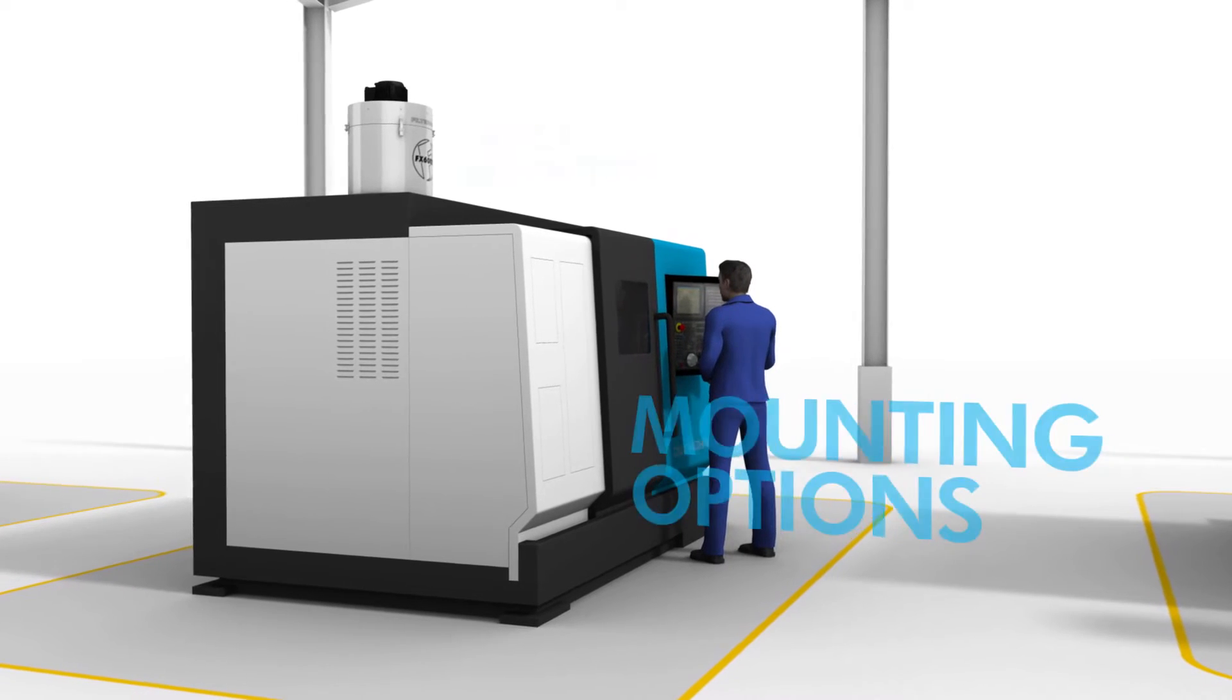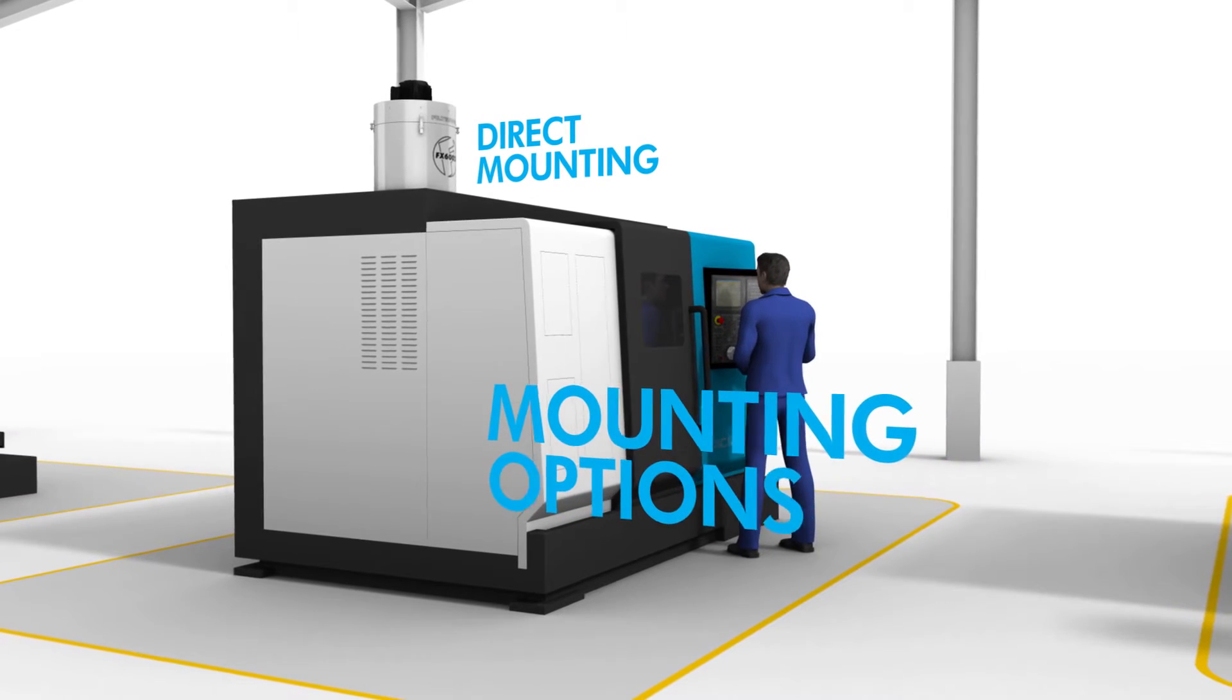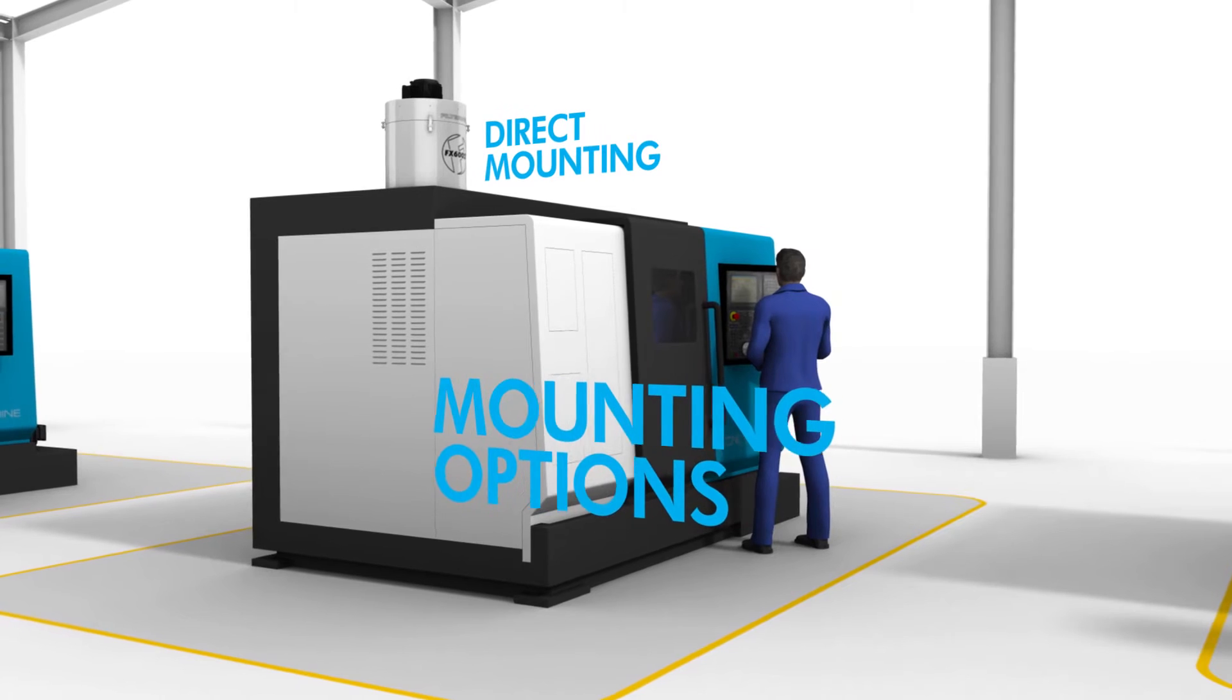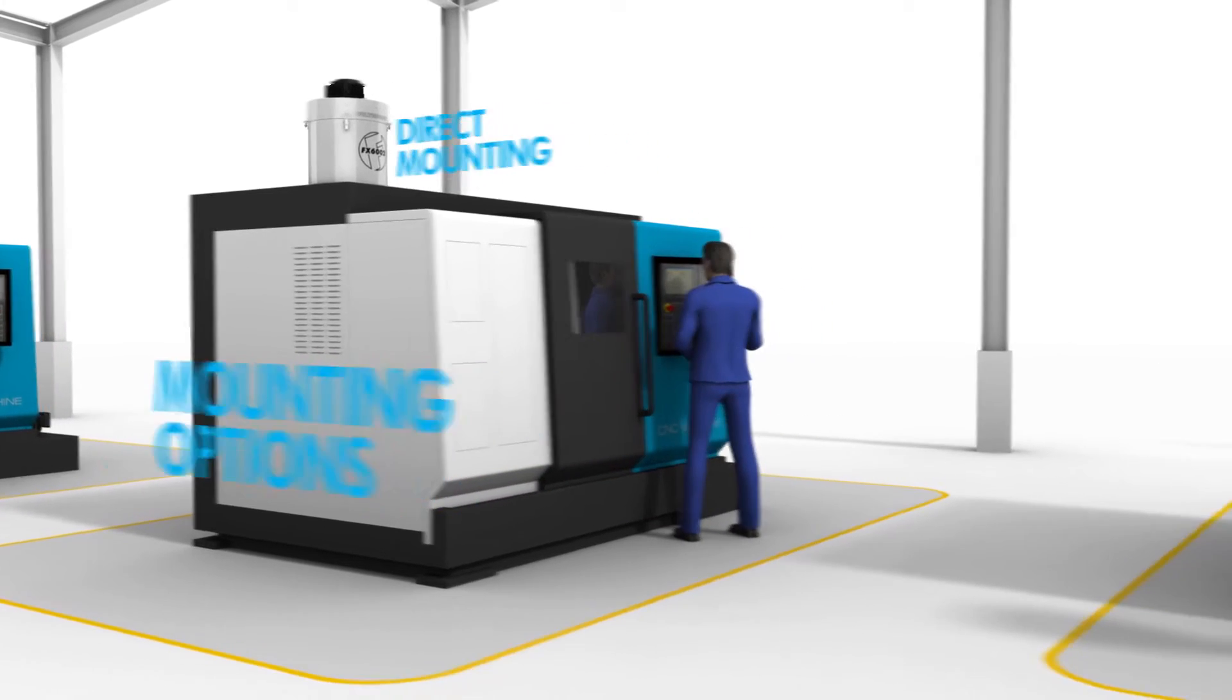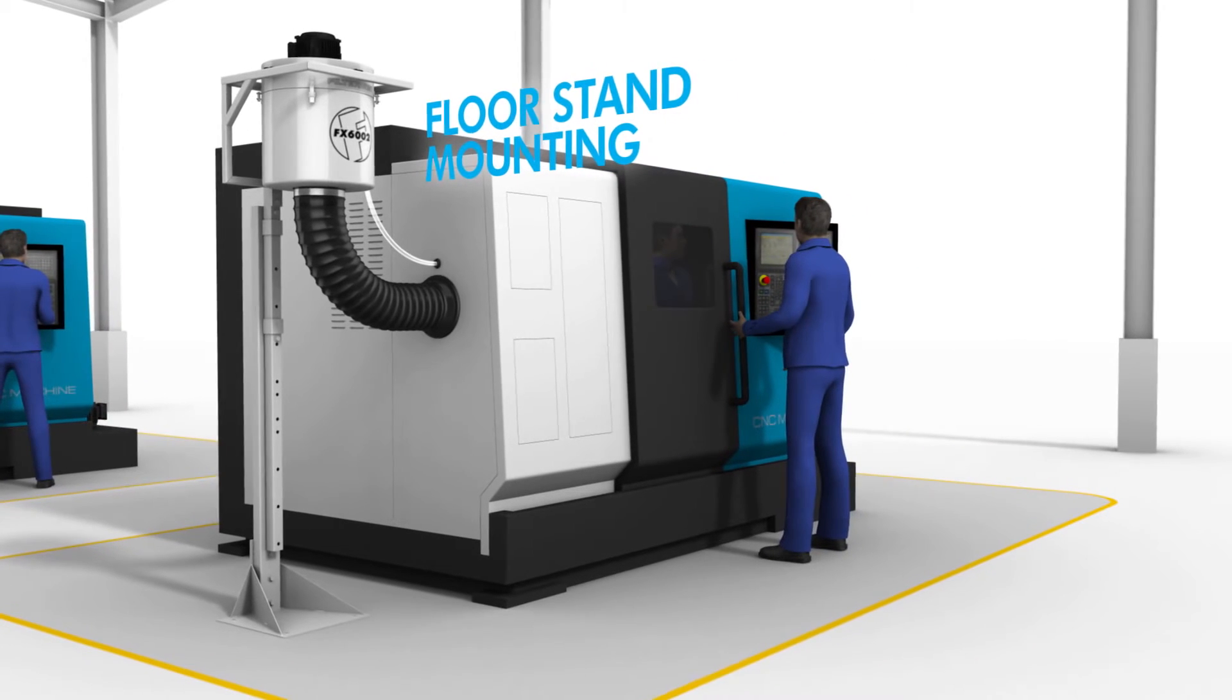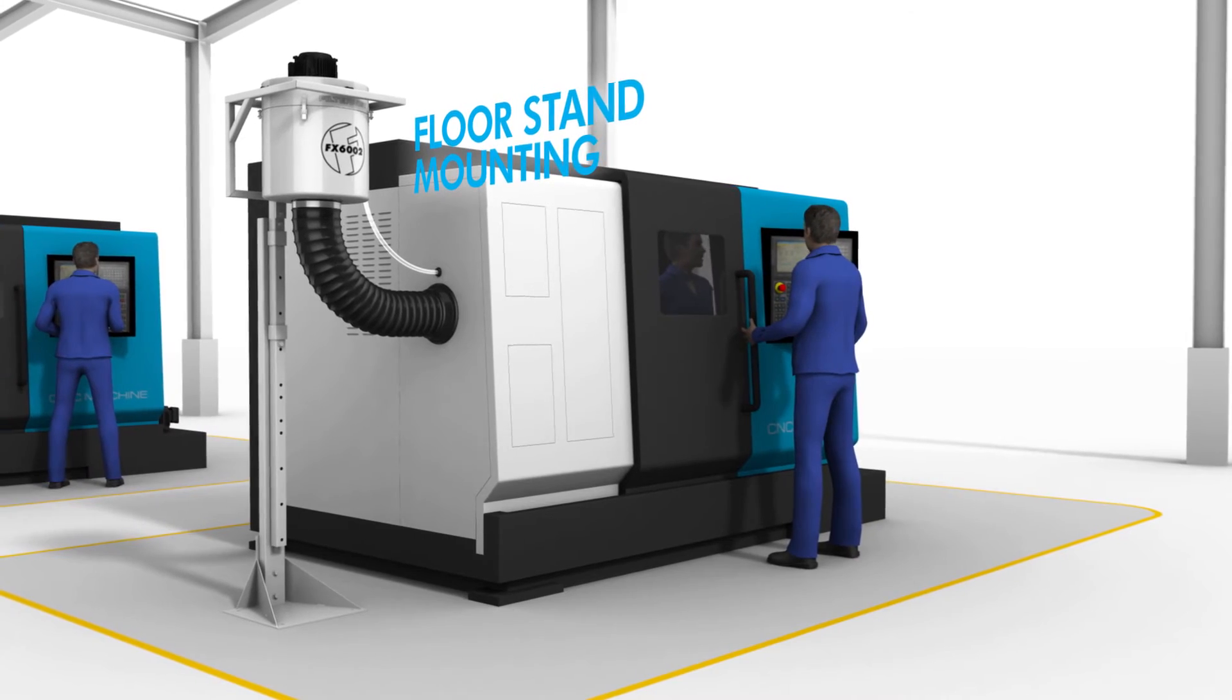Because every situation has its own particular requirements, Filter Mist has been designed with various mounting options in mind. In this case shown here, the unit is mounted on top of the machine. Another option is to mount the Filter Mist unit on a floor stand beside the machine, connected with ducting.